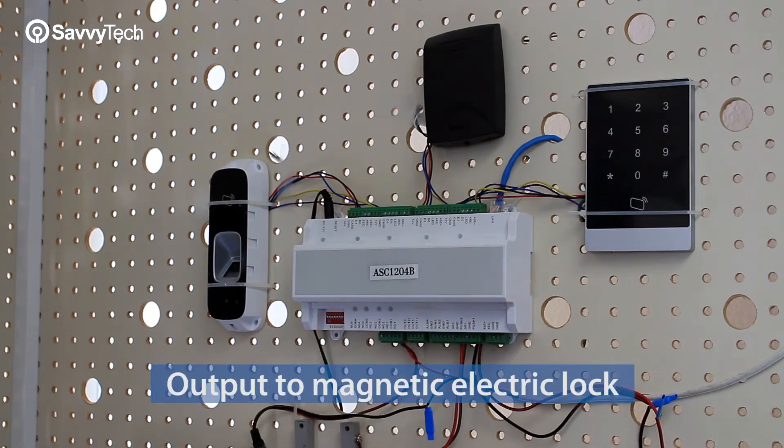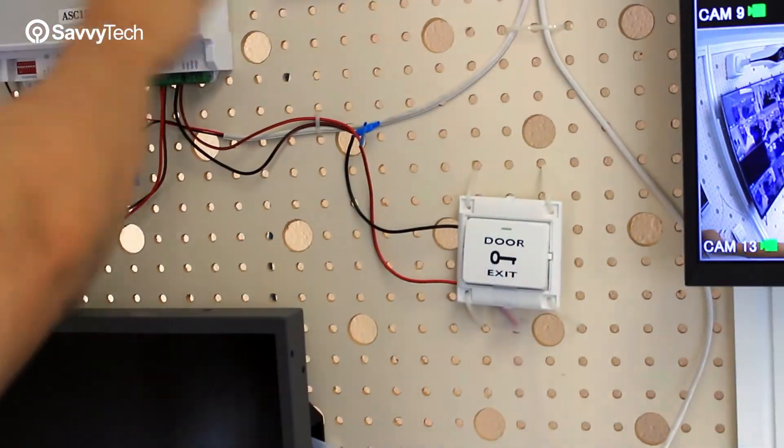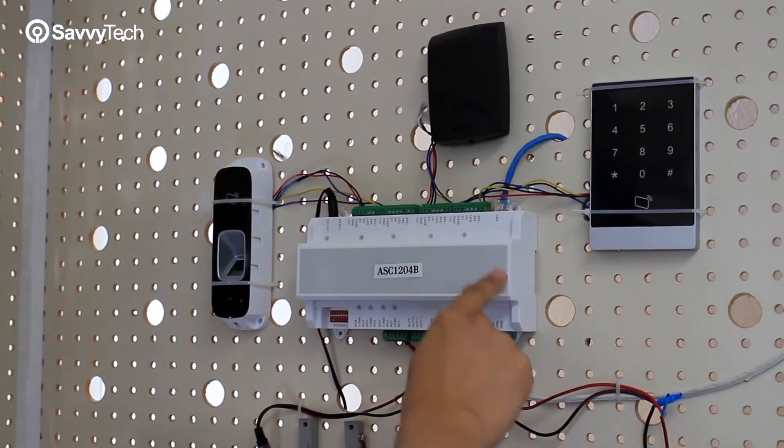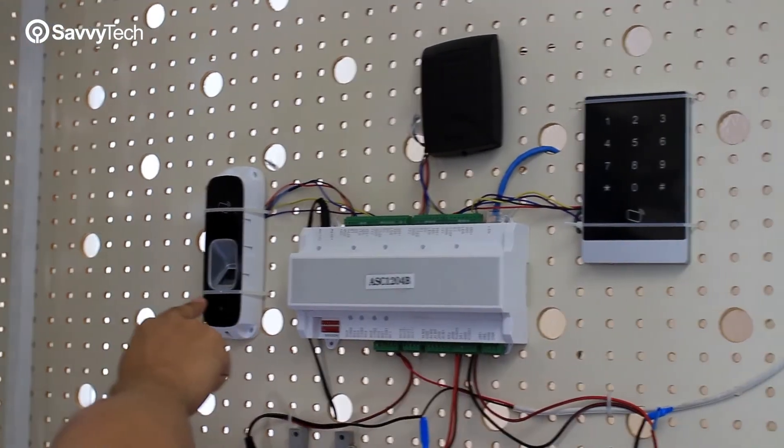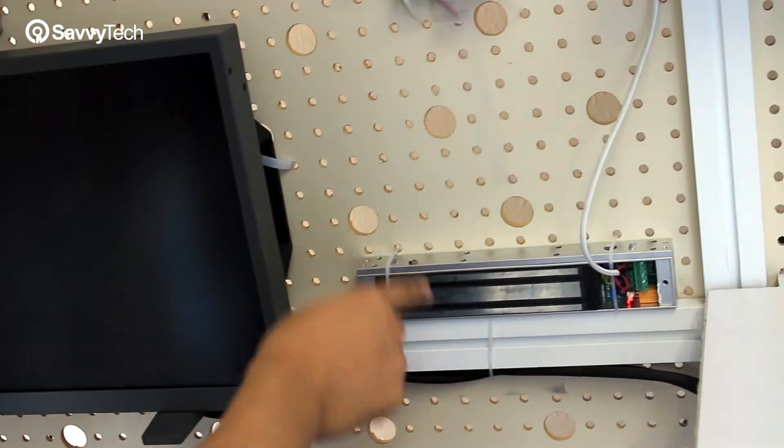The other method is to connect the output door locks and the door exit button. When you connect the different readers and you program all the different information into the SmartPSS software, whether a person scans a card, a fingerprint, or inputs a password, the door will lock or unlock.